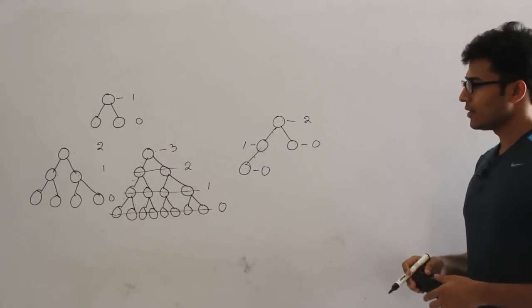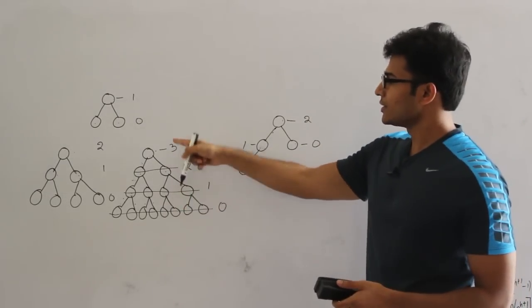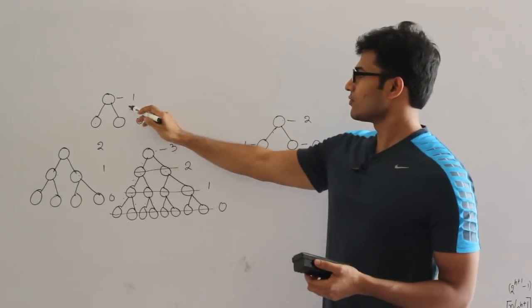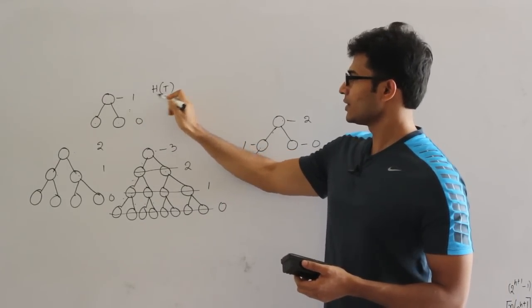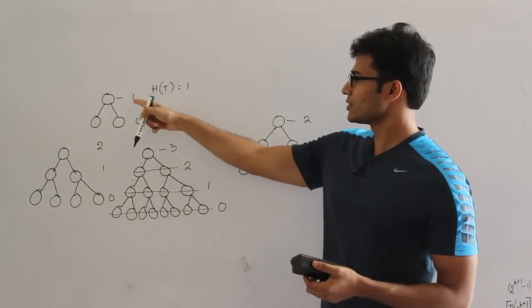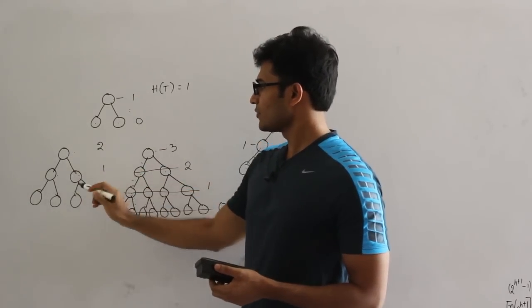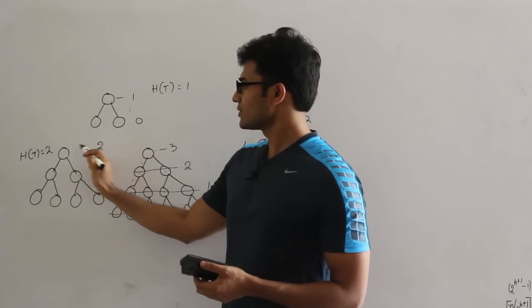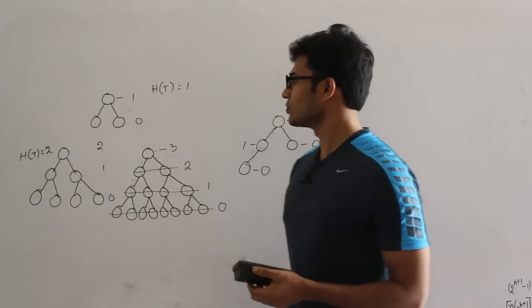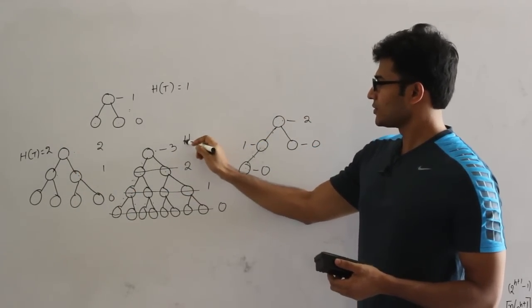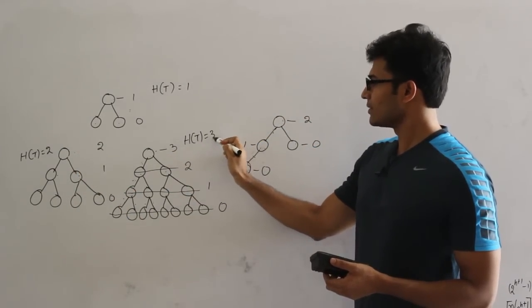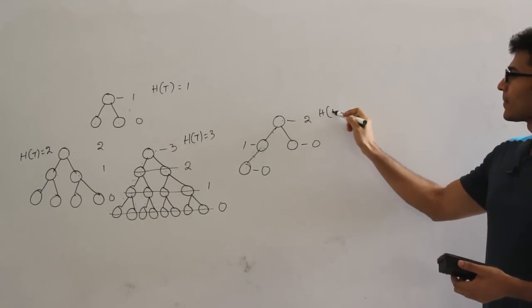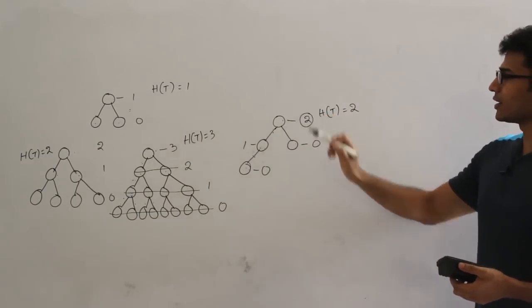The height of a tree is whatever the height of the root is. In this case the height of the tree is 1 because the root's height is 1. In this case the height of the tree is 2 because the root height is 2. In this case height is 3, and in this almost-complete case height is 2.